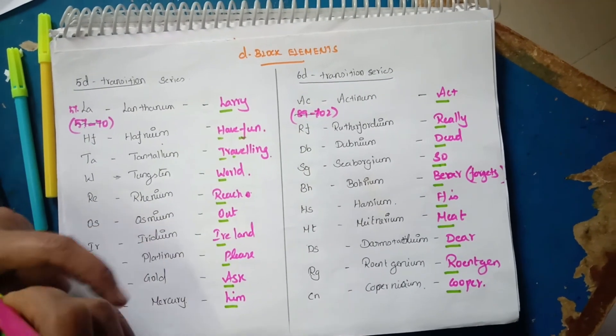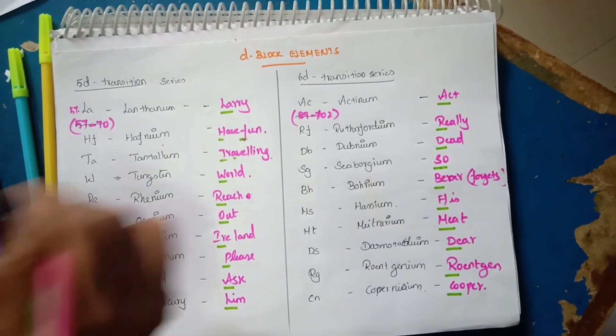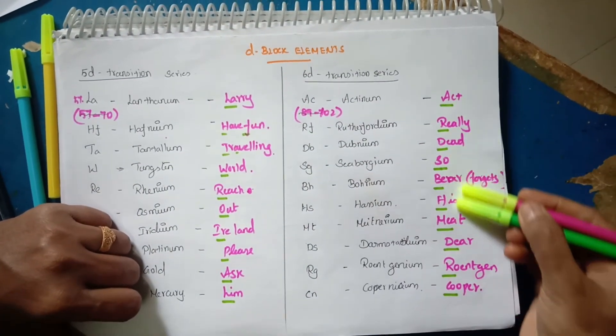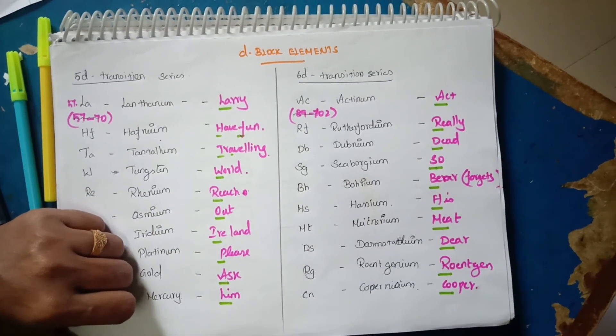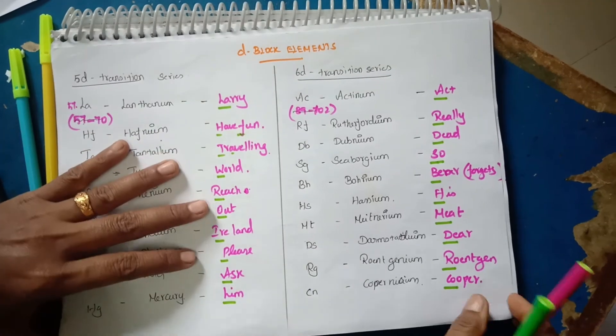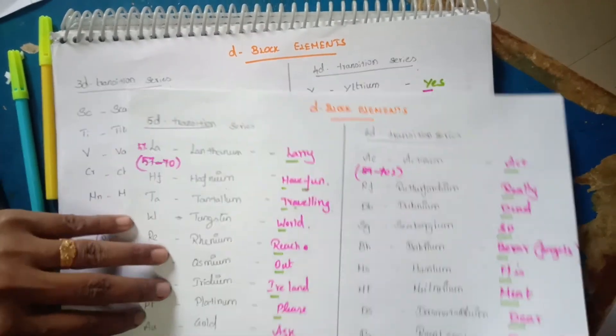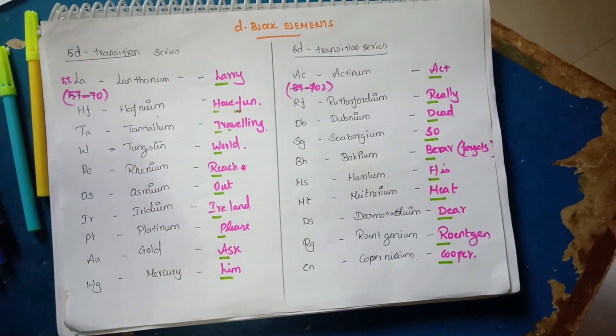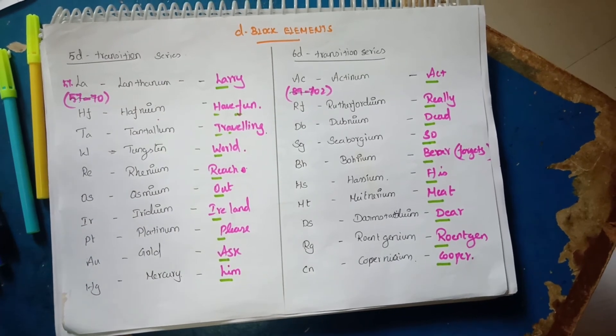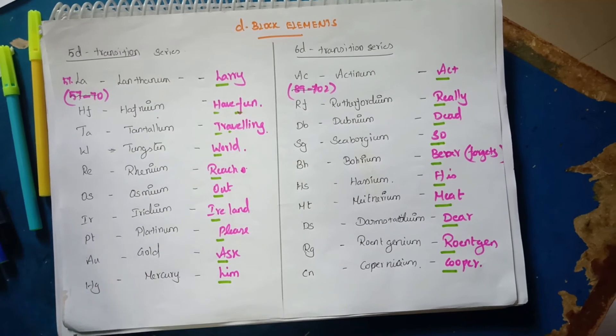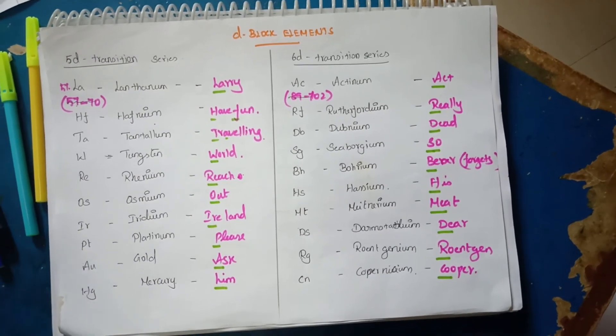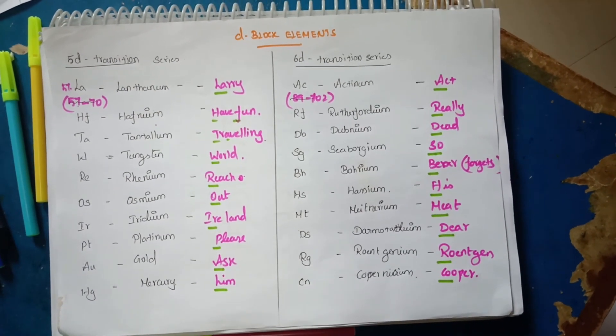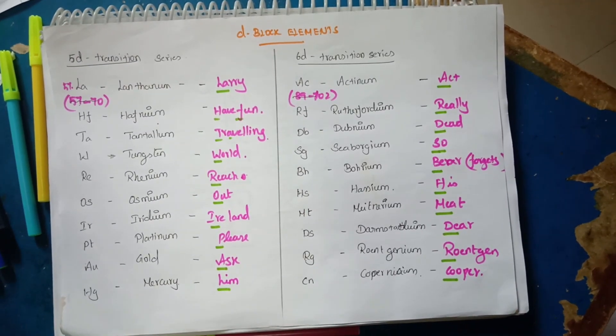So this is called the mnemonic method. This video is very useful. If you learn all the D-block elements, it's easy to learn. If you get questions about chemistry, atomic number, period, block, it's easy to learn. Thanks for watching this video. Subscribe to our channel. Press the bell icon.